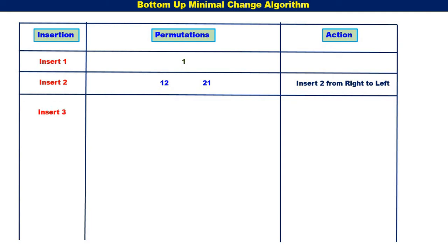Next, insert 3. Already we have 2 permutations: {1, 2} and {2, 1}. 3 should be inserted into both these permutations. First, let us consider {1, 2} — we have to start from right to left. Insert 3 to the right of {1, 2}, we get {1, 2, 3}. Then {1, 3, 2}. Then {3, 1, 2}. So 3 was inserted from right to left in {1, 2}.